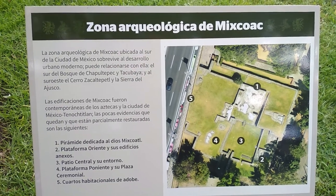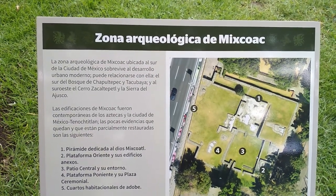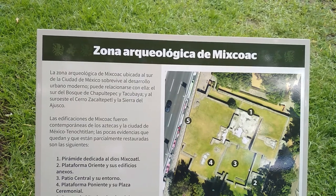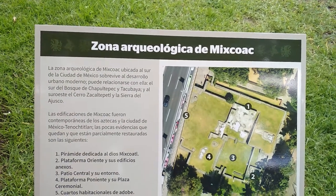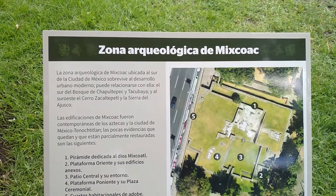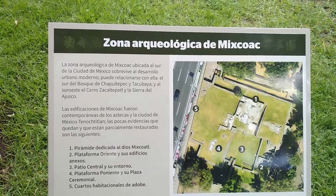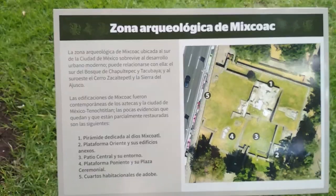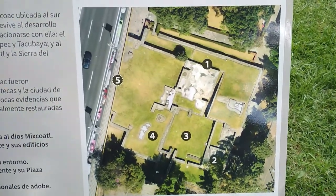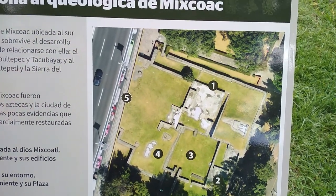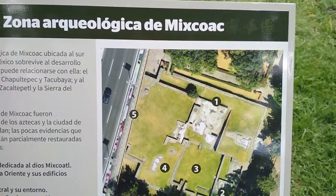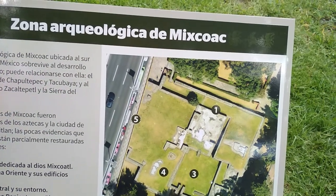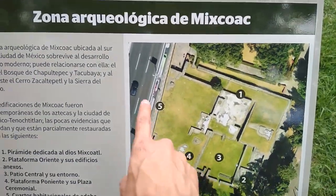La zona arqueológica de Mixcoac, ubicada al sur de la Ciudad de México, sobrevive al desarrollo urbano moderno. Puede relacionarse con ella el sur del Bosque de Chapultepec y Tacubaya, y al sureste el Cerro de Zacatepetl y la Sierra de Ajusco. Las edificaciones de Mixcoac fueron contemporáneas a los aztecas y la Ciudad de México-Tenochtitlan. Las pocas evidencias que quedan están prácticamente restauradas: pirámide dedicada al dios Mixcoatl, plataforma oriente y sus edificios anexos, patio central y su entorno, y cuartos y habitaciones de adobe.